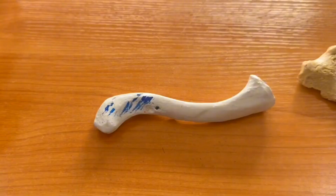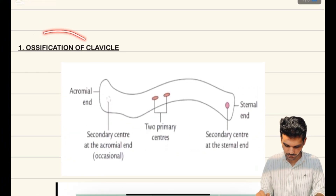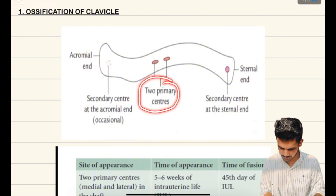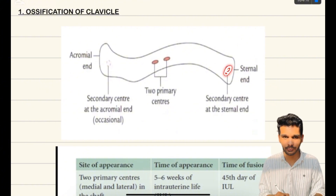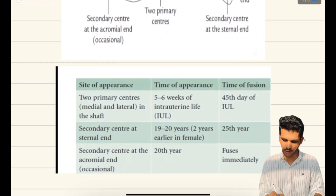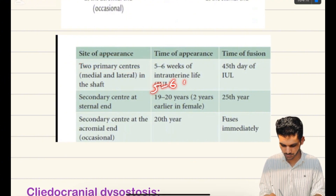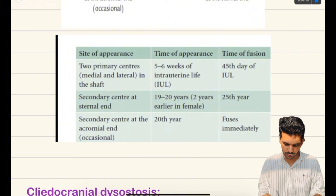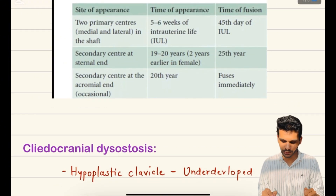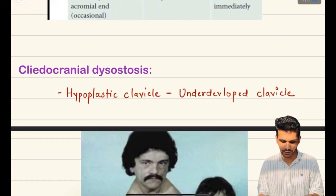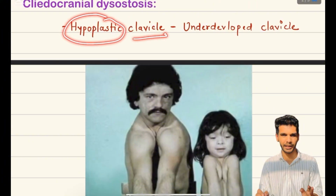Now I am going to describe the ossification of the clavicle. The clavicle has two primary centers and two secondary centers. The two primary centers are located at the shaft of the clavicle. The secondary centers — the first is located medially at the sternal end, and the other is located laterally at the acromial end. The primary centers appear at the 5th to 6th week of intrauterine life and fuse by the 45th day of intrauterine life. The secondary centers appear at 19 to 20 years — in females they appear earlier — and fuse at 25 years. A clinical condition called cleidocranial dysplasia involves absence or partial development of the clavicle, resulting in a hypoplastic (underdeveloped) clavicle.